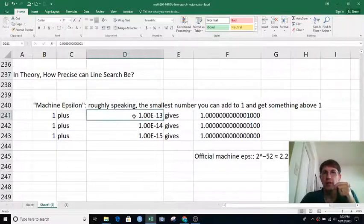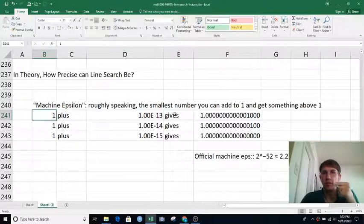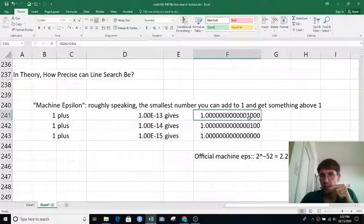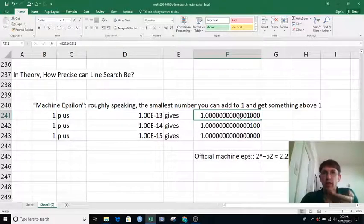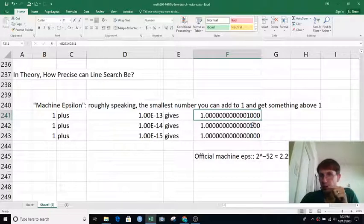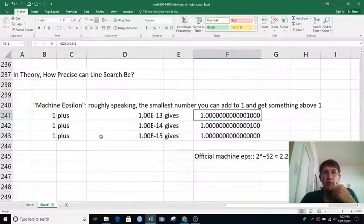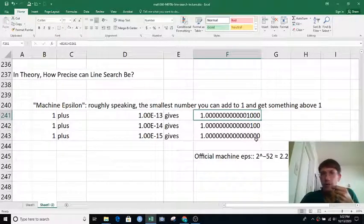If I tried adding 10 to the minus 13 to 1, you can see there's a 1 right here, so I got something different than 1. 10 to the minus 14, I get a 1 over here which is different than 1. What if I had 10 to the minus 15? You would expect to see a 1 here but we're not seeing it.